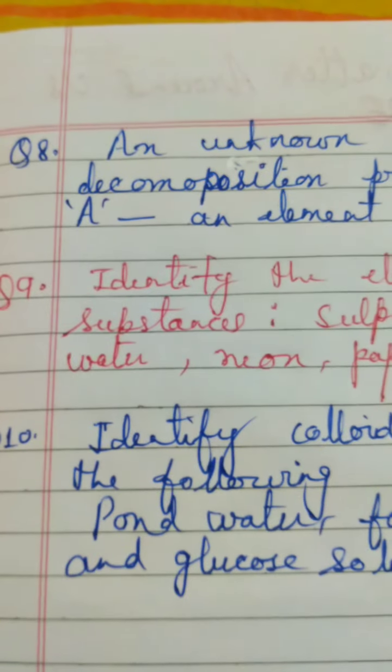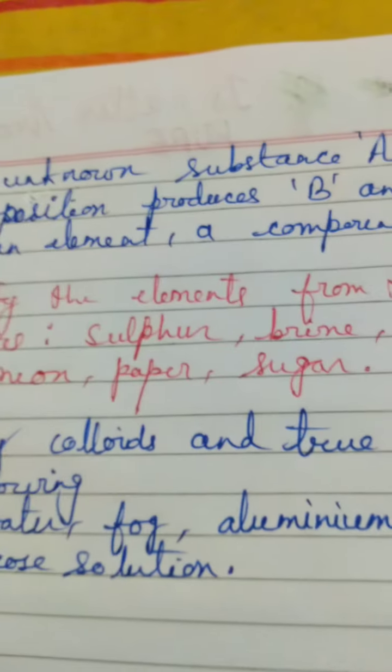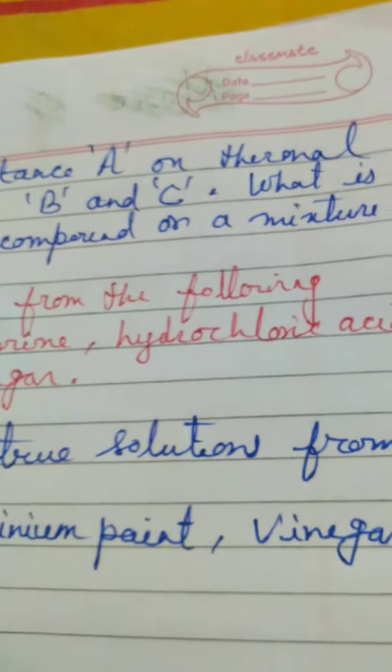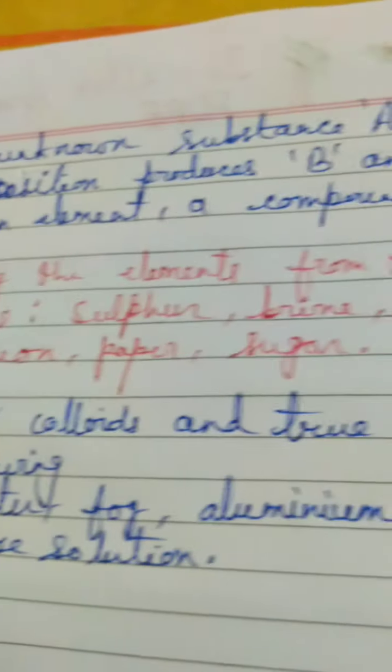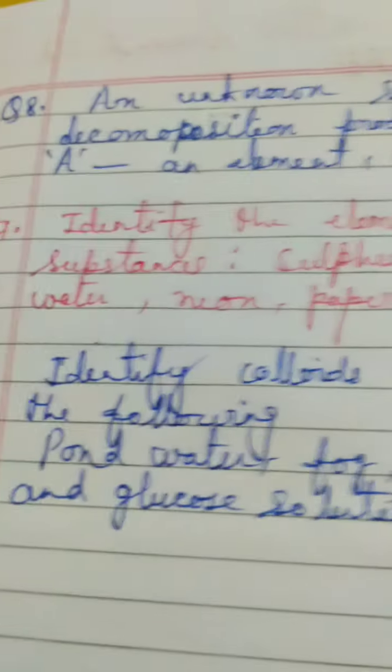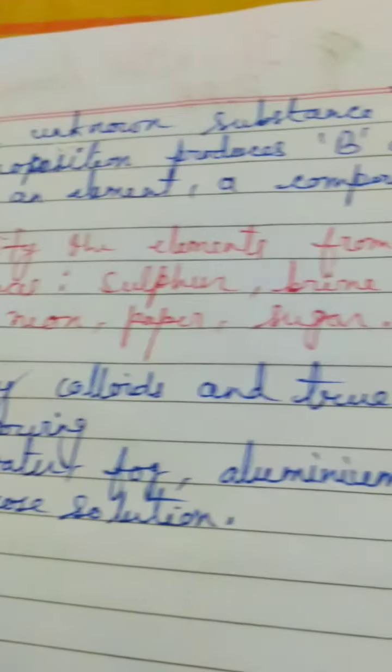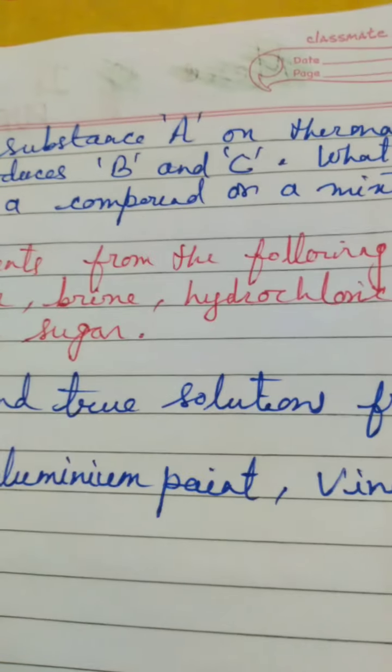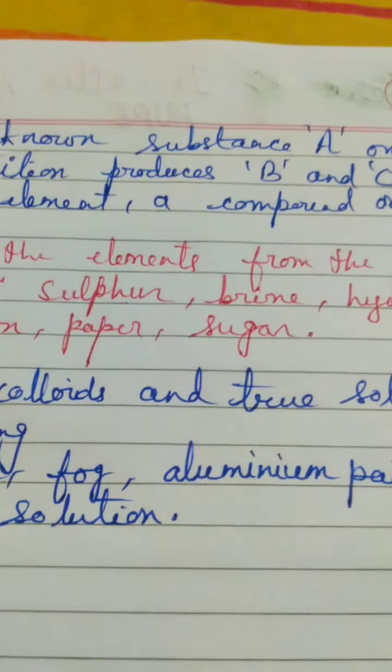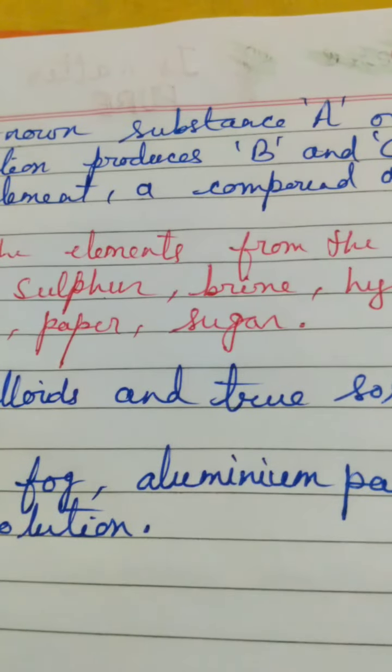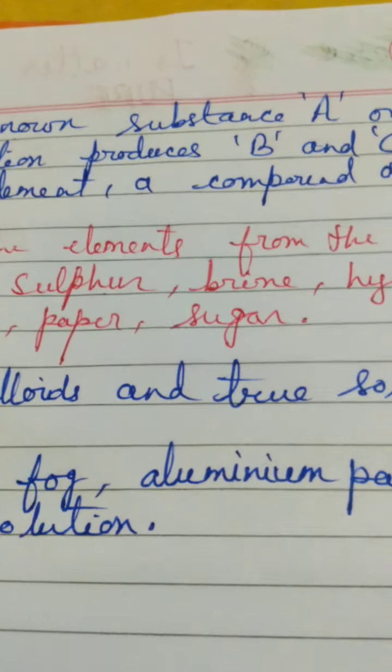This question looks interesting boys. Question number 8 is an unknown substance A on thermal decomposition produces B and C. What is A? An element, a compound or a mixture? Now you have to identify what is the nature of or what is the form of A. Boys, first of all, try to know that what is thermal decomposition.